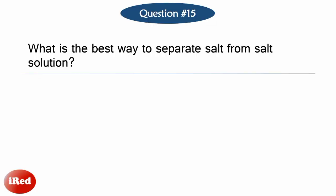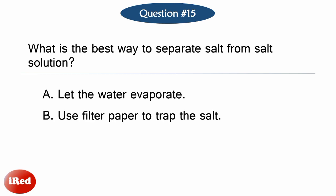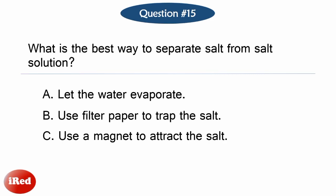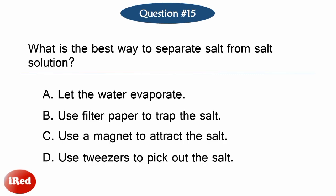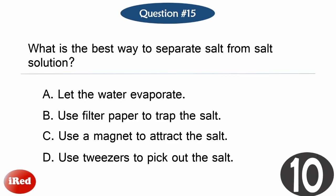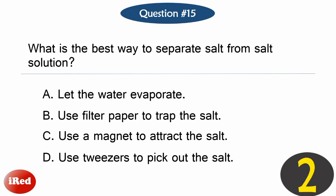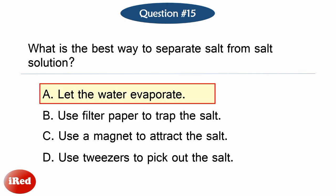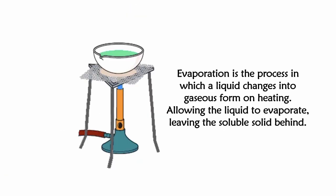Number fifteen: What's the best way to separate salt from salt solution? Letter A: Let the water evaporate. Letter B: Use filter paper to trap the salt. Letter C: Use a magnet to attract the salt. Or letter D: Use tweezers to pick out the salt. The correct answer is letter A: Let the water evaporate. By allowing the water to evaporate, the solid salt is left behind.